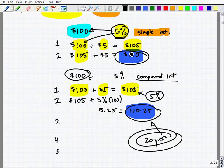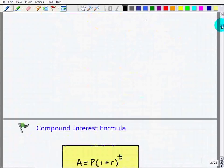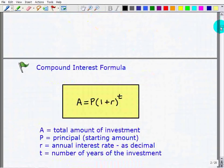So compound interest, a much better way to go. And we say money grows exponentially using compound interest. So let's talk about compound interest specifically now.